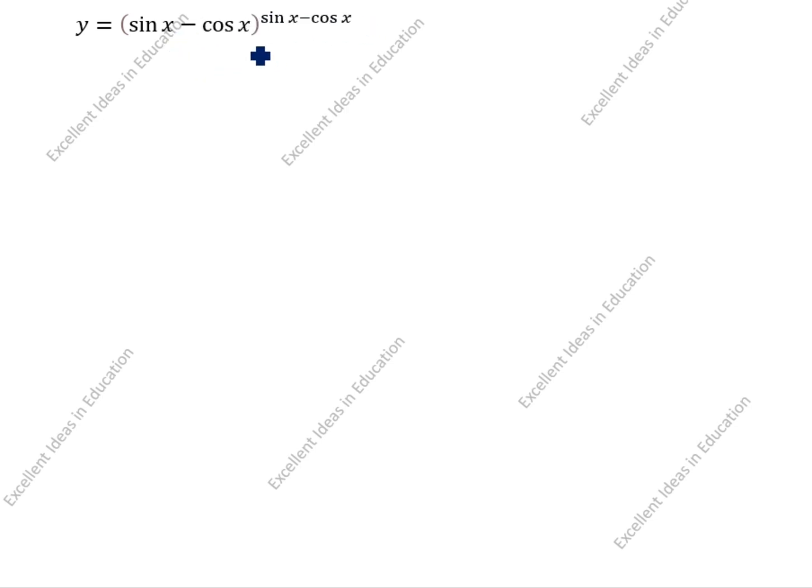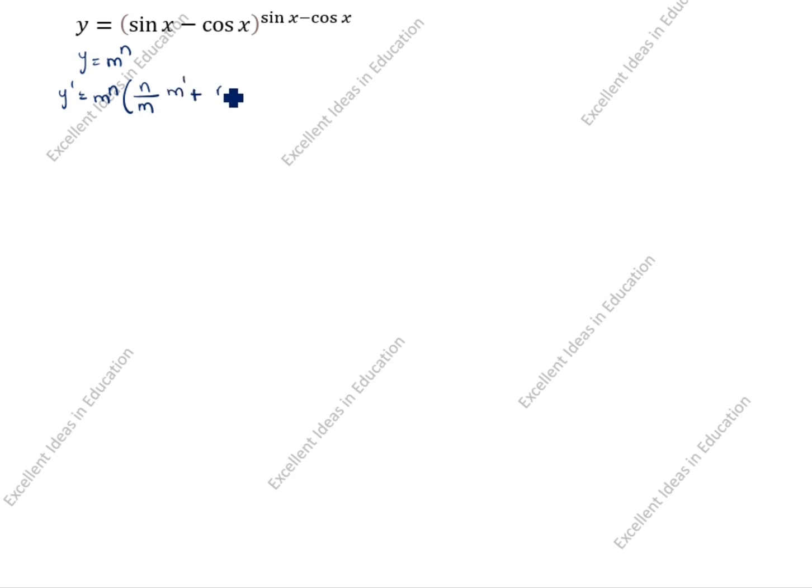In this we will see one trick. y is equal to m to the power n. In this question, m is sin x minus cos x and n is also sin x minus cos x. So how we will differentiate m power n: y dash is equal to m power n, with n over m times m dash, plus n dash times log m. This is the formula.